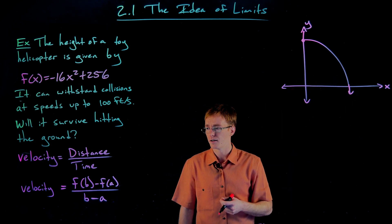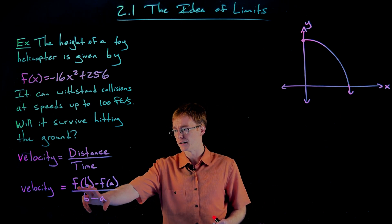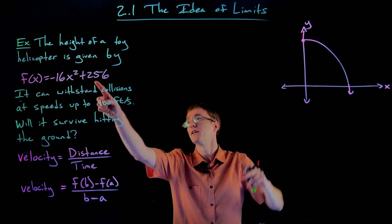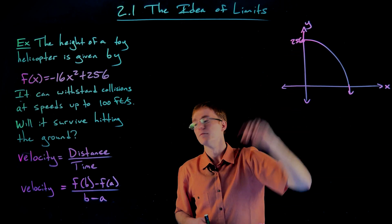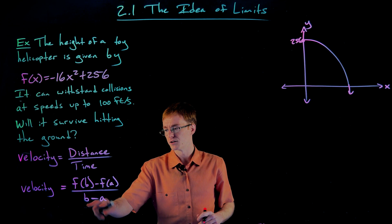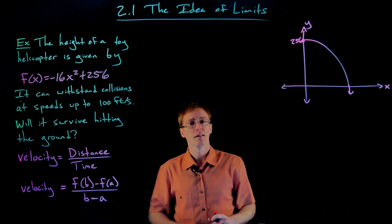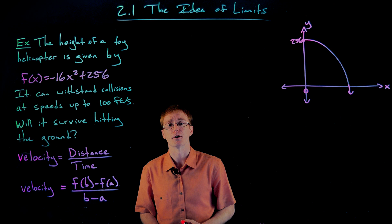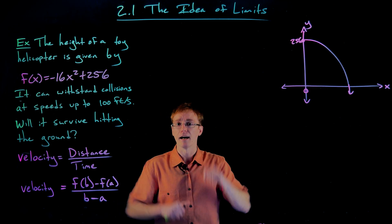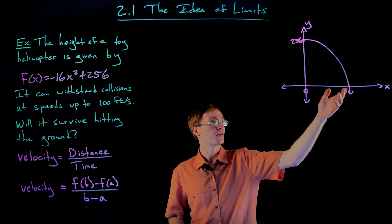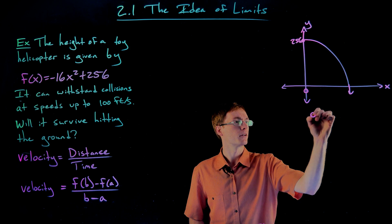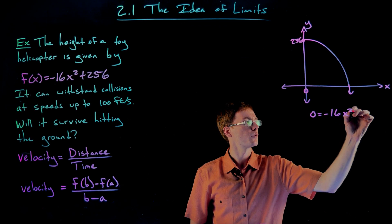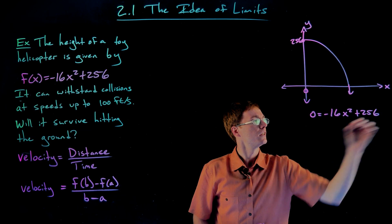So we have three quarters of the information we need. We know the final height — when it hits the ground — and the initial height is 256 feet at the peak. The piece of information we're missing is the final time: when does the toy helicopter hit the ground? The initial time is zero. To find the final time, we want to figure out when the height equals zero, so when is negative 16x squared plus 256 equal to zero?